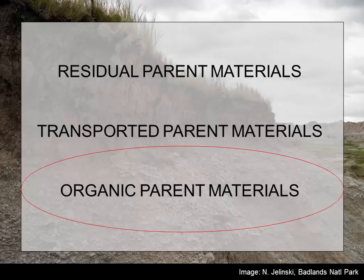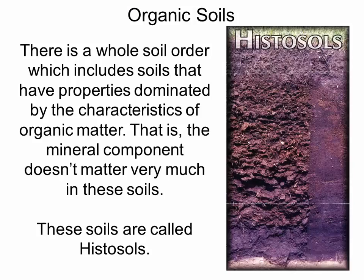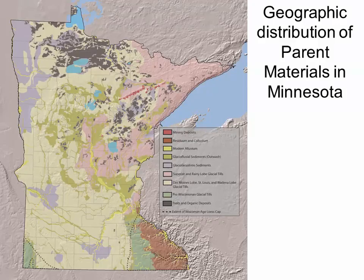We do have the largest area of peatlands in the country in Minnesota — another highlight of the diversity of soils in our state. Organic materials would be the third kind of parent material we think about. We have a whole soil order, histosols, which includes soils dominated by organic materials. These are peatlands that have accumulated organic materials, mostly in northern Minnesota — the Red Lake Peatlands and parts of Glacial Lake Upham. Not so important for irrigation — we're probably trying to drain these things.